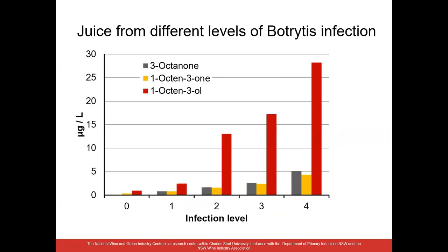Moving to the targeted analysis, looking at earthy mouldy characters that are well known — the main ones found in juice infected with Botrytis were 3-octanone, octan-3-one, and 1-octan-3-ol. These are the main ones found in a variety of horticultural crops infected with fungi. Interestingly, we didn't detect geosmin or methyl isoborneol, two volatile organic compounds reported from grapes infected with other fungal pathogens. Not surprisingly, with increasing infection we're getting increasing levels of these compounds. The y-axis scale on juice goes up to 30 micrograms per litre.